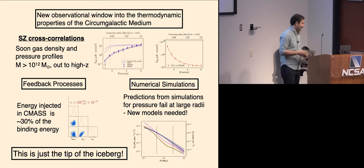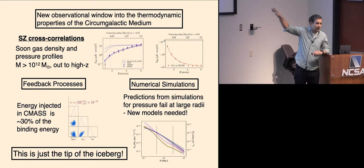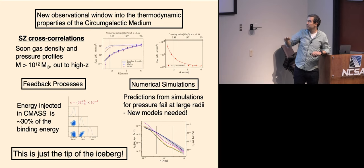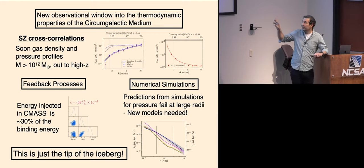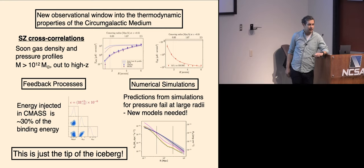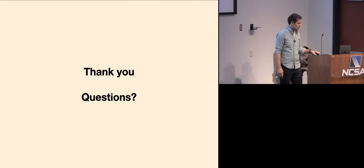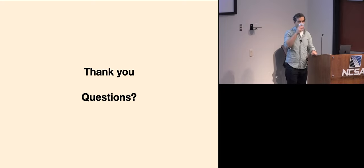In summary: I showed you the power of cross-correlations with current and future CMB datasets, how well we can constrain feedback processes with these measurements and our forward modeling, and that there's potentially a tension suggesting new models or more detailed simulations are needed — especially for the thermal SZ and the pressure in these 10^13 solar mass halos. Thank you.